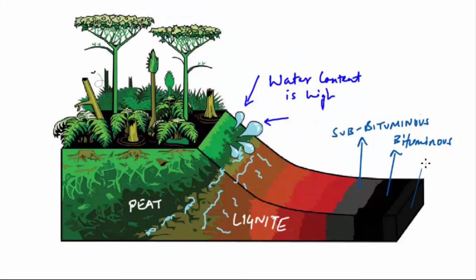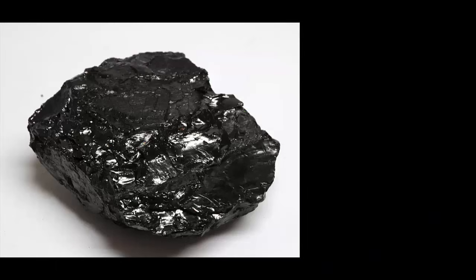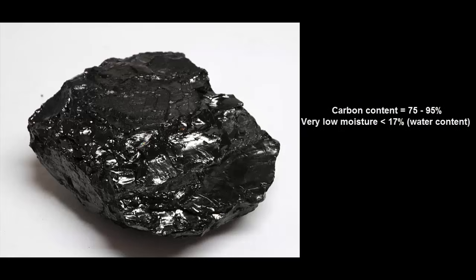The fifth and final stage represents anthracite coal. It is the best form of coal with very low pollution and high calorific value, meaning it produces a lot of heat. Anthracite is very pure and contains 75 to 95 percent carbon. It has a very high density and is very hard. This coal has a high submetallic lustre, meaning it's kind of shiny.